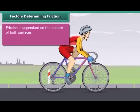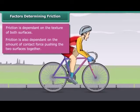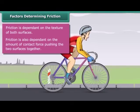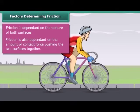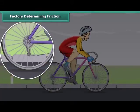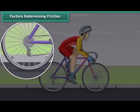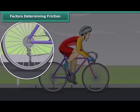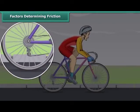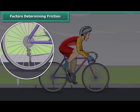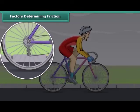Friction is dependent on the texture of both surfaces, and also on the amount of contact force pushing the two surfaces together. While in motion, the tires of the bicycle are rubbing against the surface of the road. When two surfaces rub on one another, friction comes into play. This force acts in the direction opposite to the direction of motion, slowing down the motion and finally bringing the moving object to a stop.